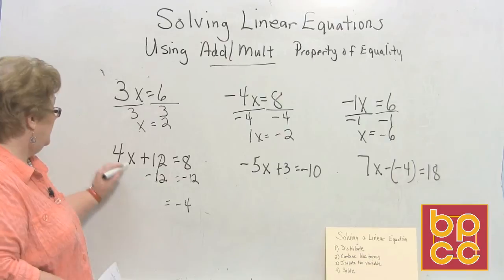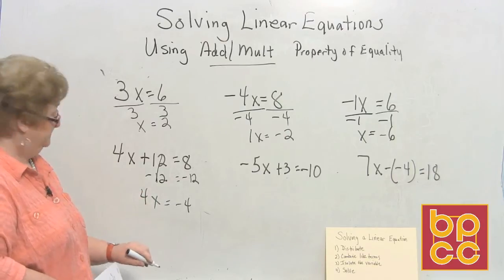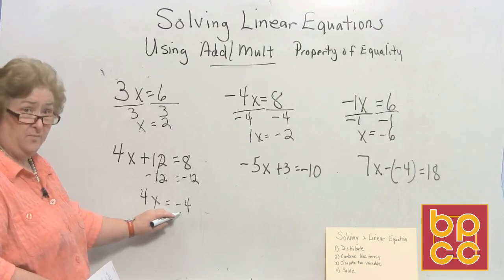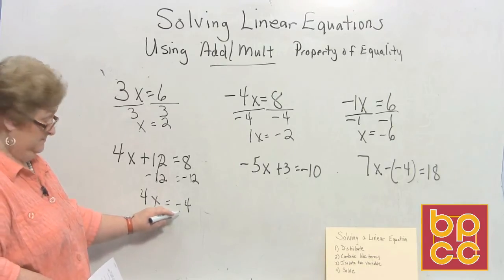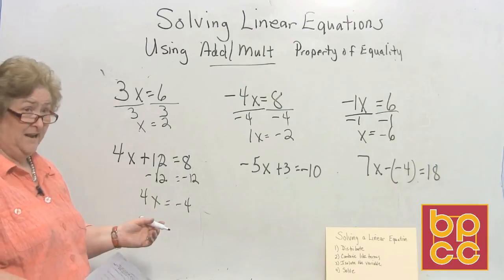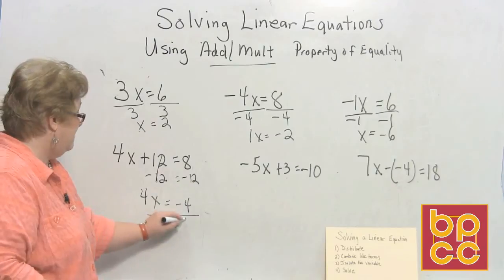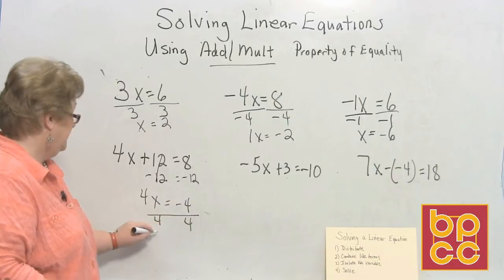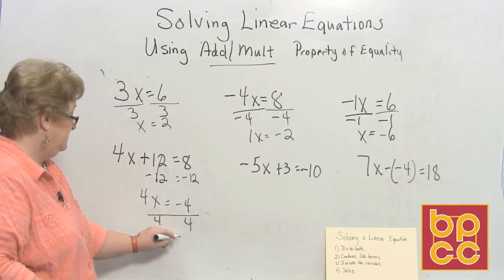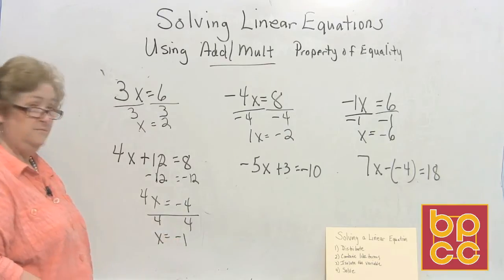Let's do pizza this time. We have four people going to get negative four pizzas. What do we have to divide by? We've got to divide by the number of people we have. So if I divide by four, one person will get — if that's possible — a negative one pizza.